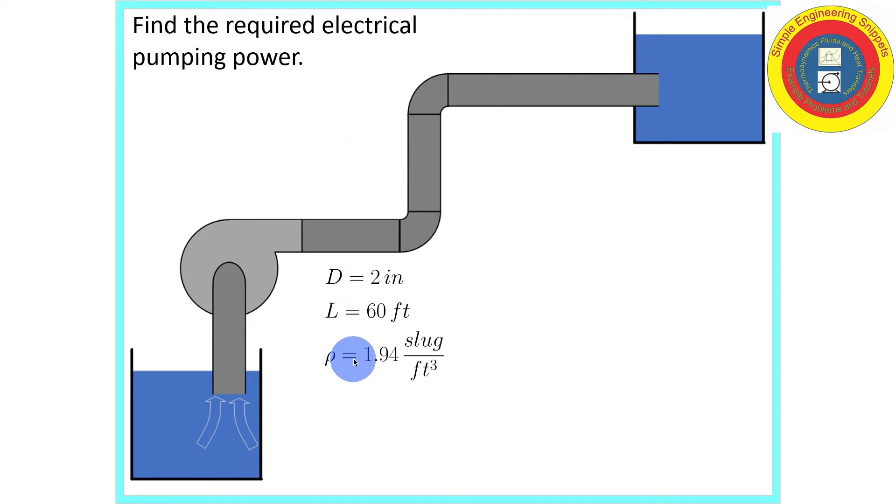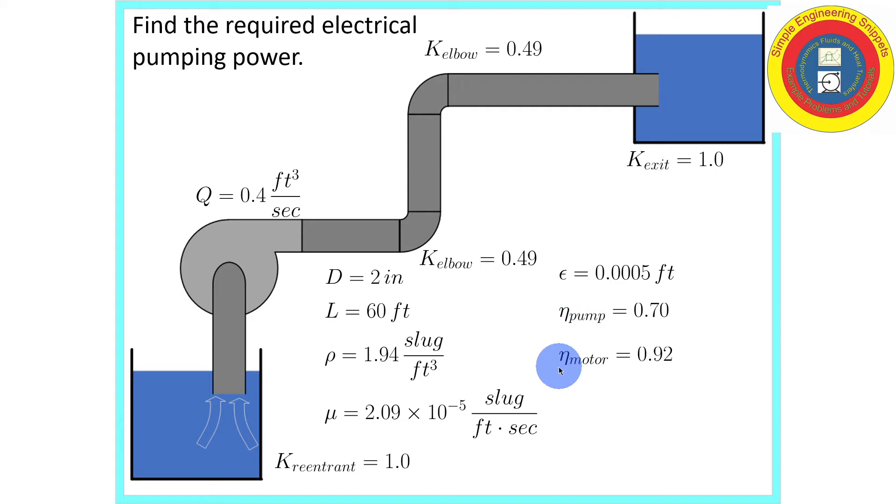Diameter, length, the fluid is water, so we have the density and the dynamic viscosity. Entrance loss is 1.0, exit loss is 1.0, and each elbow has a minor loss coefficient of 0.49. Flow rate of concern is 0.4 cubic feet per second, and roughness of the pipe is 0.0005 feet. Efficiency of the pump is 0.7, and the efficiency of the motor is 0.92.